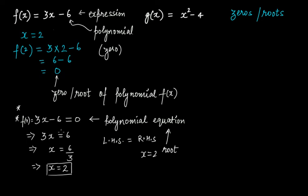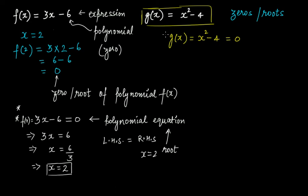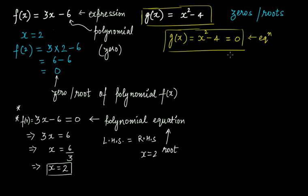Whenever you solve for the value of x, you always equate it with 0. For example, gx is equal to x squared minus 4 is a polynomial. When we write gx equal to x squared minus 4 equal to 0, this is now a polynomial equation — it's an equation because the polynomial is now equal to 0, giving it a left-hand side and a right-hand side.